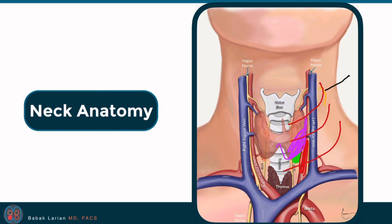You insert the needle in close proximity to where the nerves are and inject numbing medicine at multiple spots, numbing up the nerves that are in charge of feeling to this half of the neck where the thyroid and the parathyroids are.